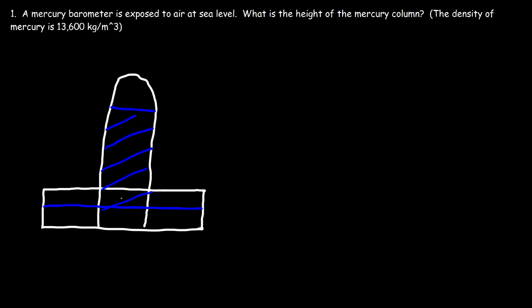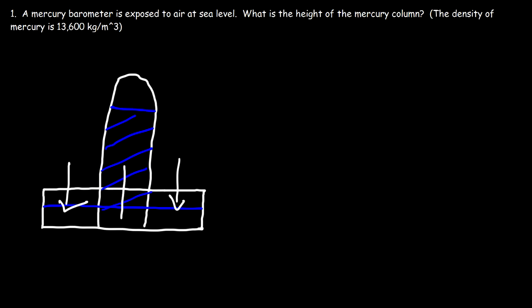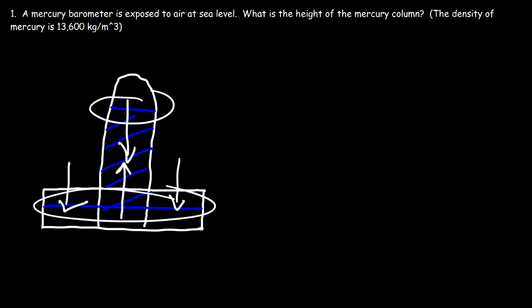The weight of the atmosphere — all the gas particles — exerts a weight force on the surface of the fluid, so a pressure is exerted. According to Pascal's law, the pressure exerted on a fluid is transmitted throughout that fluid. That downward pressure creates an upward pressure that supports the weight of the fluid above it. Anytime you have a pressure, you have a force, and that's why this height is above the dish level.